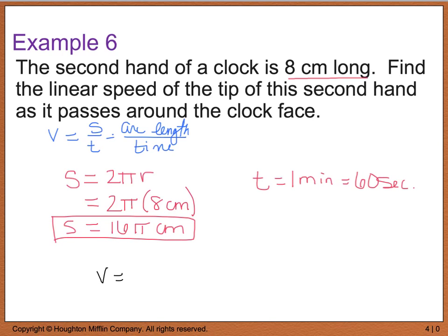I can take my s value of 16 pi centimeters, and divide that by my time of 60 seconds, and when I plug that in my calculator, and I am going to plug in the pi, I get something that's approximately equal to 0.838. And my units, then, are centimeters per second.